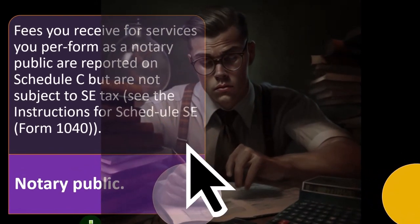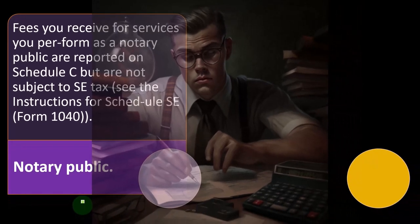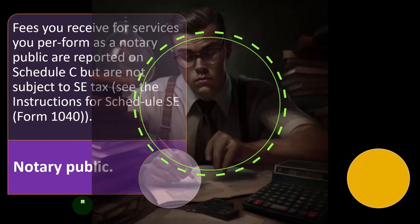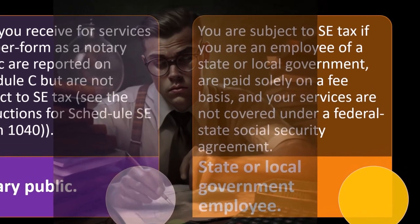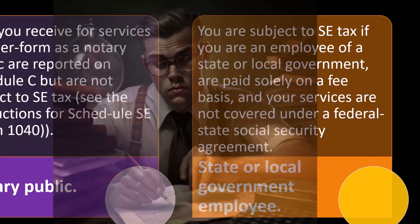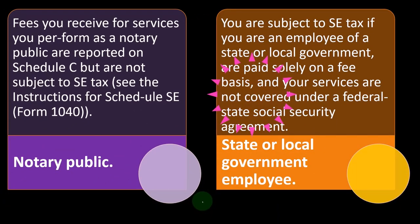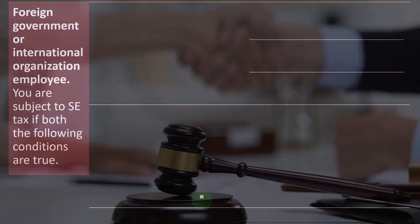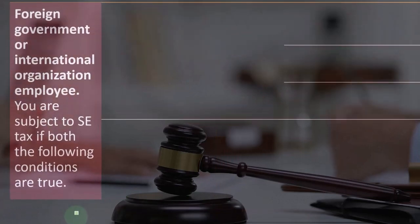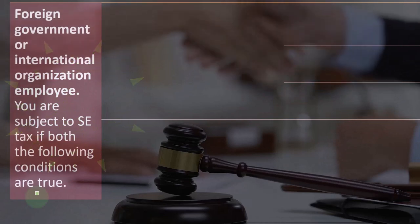For notary publics: fees you receive for services performed as a notary public are reported on Schedule C but are not subject to SE tax — see the instructions for Schedule SE, Form 1040. For state or local government employees: you are subject to SE tax if you are an employee of a state or local government, paid solely on a fee basis, and your services are not covered under a federal-state social security agreement.